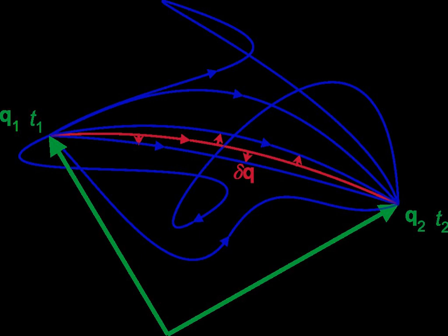S of q from t1 to t2 equals the integral from t1 to t2 of L of q, q dot, t dt, where the dot denotes the time derivative, and t is time.